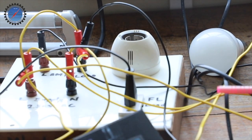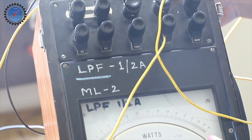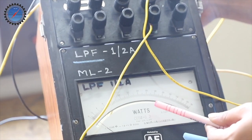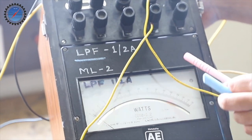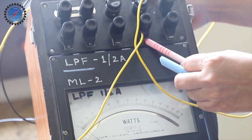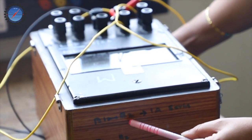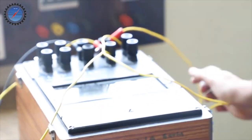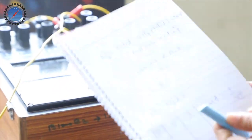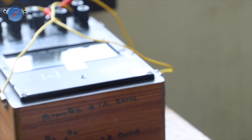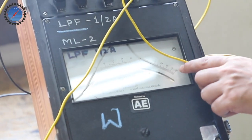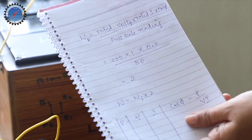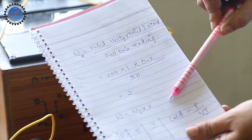First, we calculate the wattmeter constant. This is an LPF — low power factor — wattmeter, since we have taken an RL load. The cos phi of this instrument is 0.2. The rated voltage selected is 300 volts, and the rated current with B1 and B2 connected is 1 amp. The full scale reading is 30 divisions. Substituting these values, the wattmeter constant comes out to be 2. Whatever the wattmeter indicates must be multiplied by 2 to get the exact power consumed.